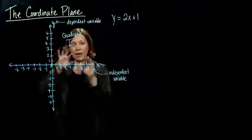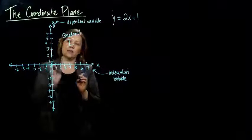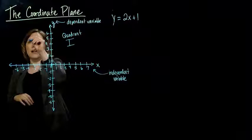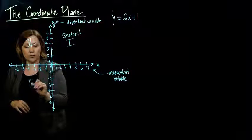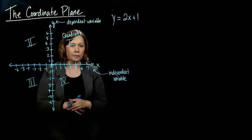So we start in the positive, right? Where both what's on the horizontal axis and what's on the vertical axis are positive. We start there. That's quadrant one. And then go counterclockwise. Quadrant two, quadrant three, quadrant four.